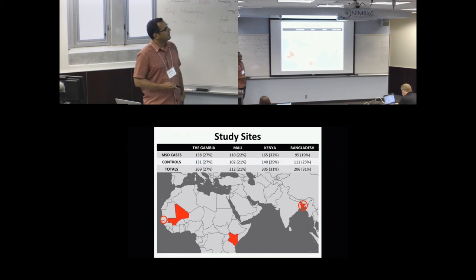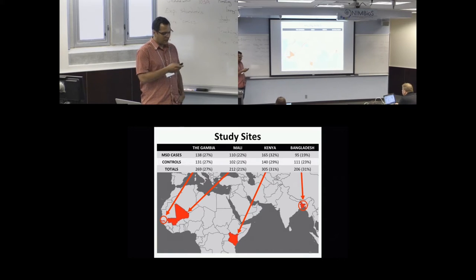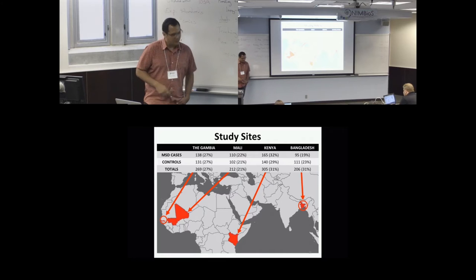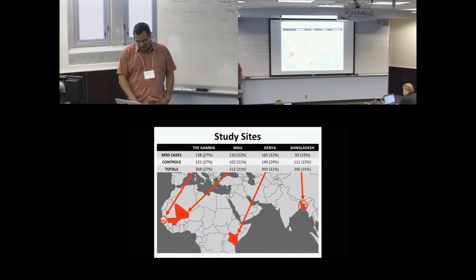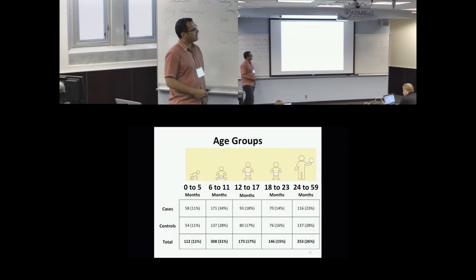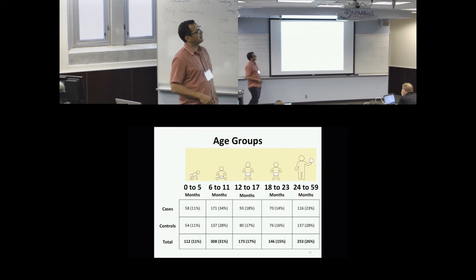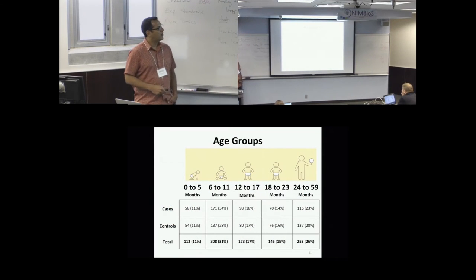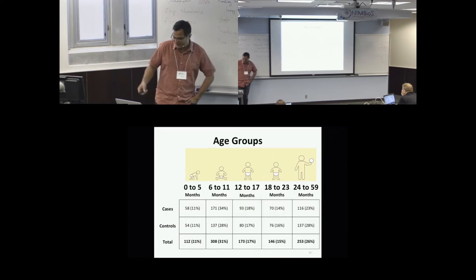It had four sites, three in Africa, one in Southeast Asia, in the Gambia, Mali, Kenya, and Bangladesh. Pretty relatively well designed in terms of cases and controls geographically and in terms of that outcome, and also in terms of groupings in terms of age, both case and disease. So it was a pretty convincing argument to get me to work on it.